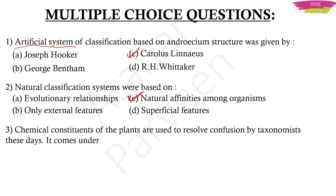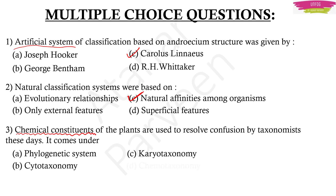The next question: chemical constituents of the plants are used to resolve confusions by taxonomists these days — it comes under which system? Whenever you read a question, underline key terms. Here the key term is 'chemical constituents.' The options are: phylogenetic system, cytotaxonomy, cariotaxonomy, or chemotaxonomy. The answer is chemotaxonomy.